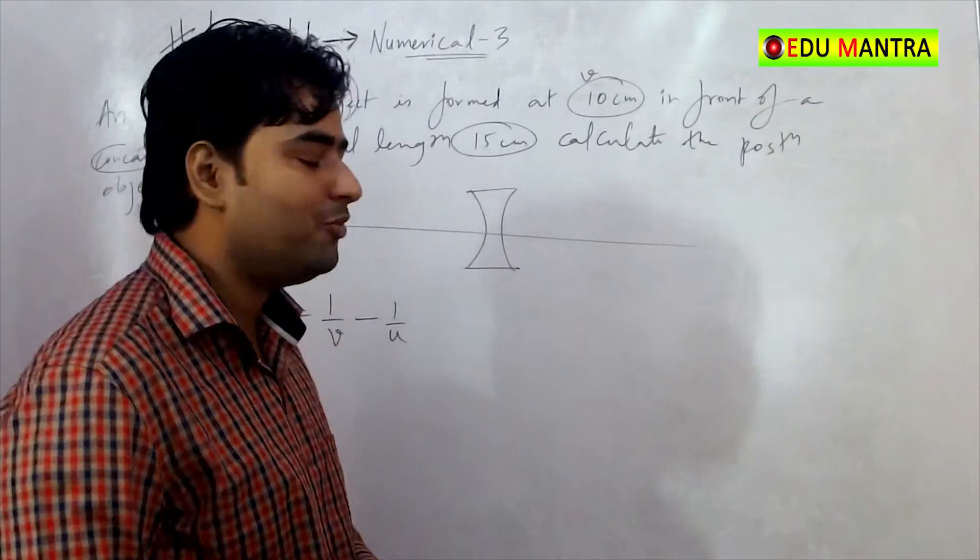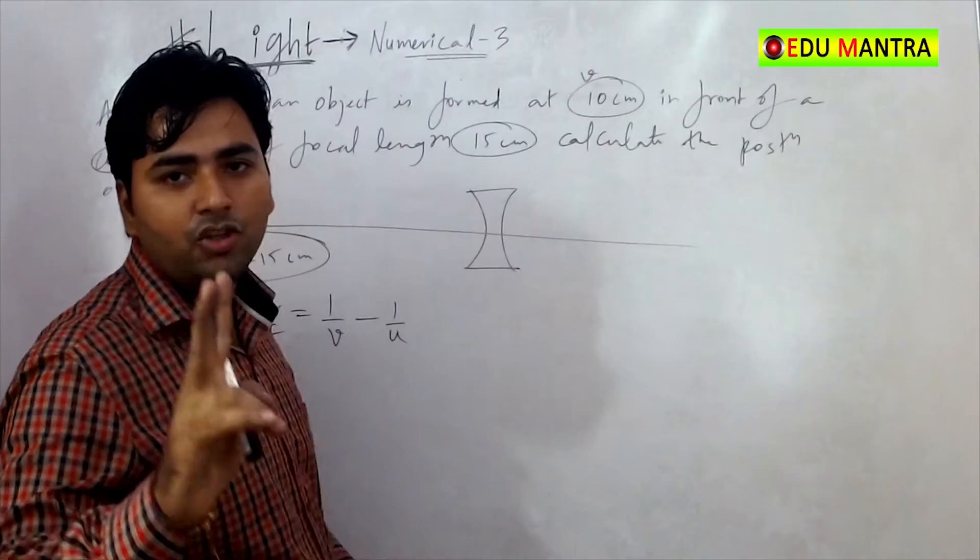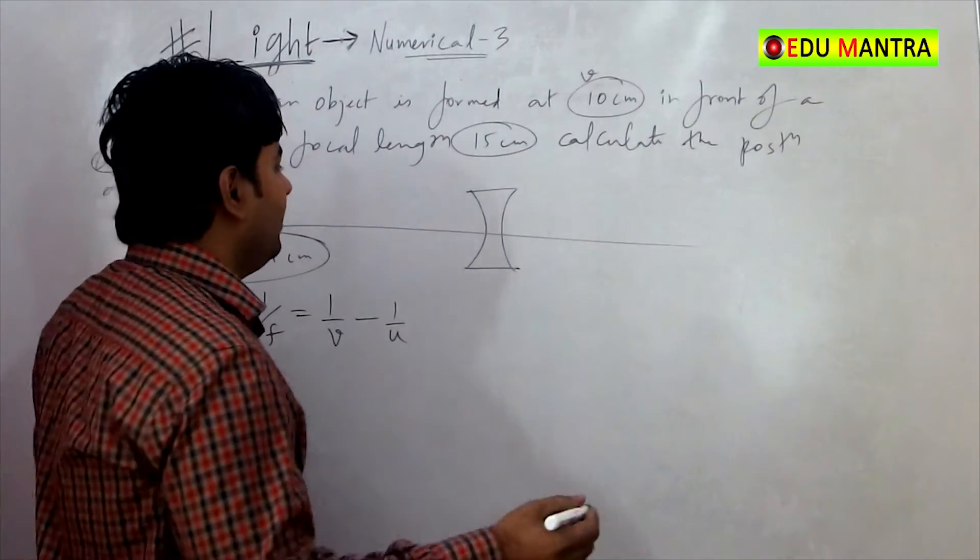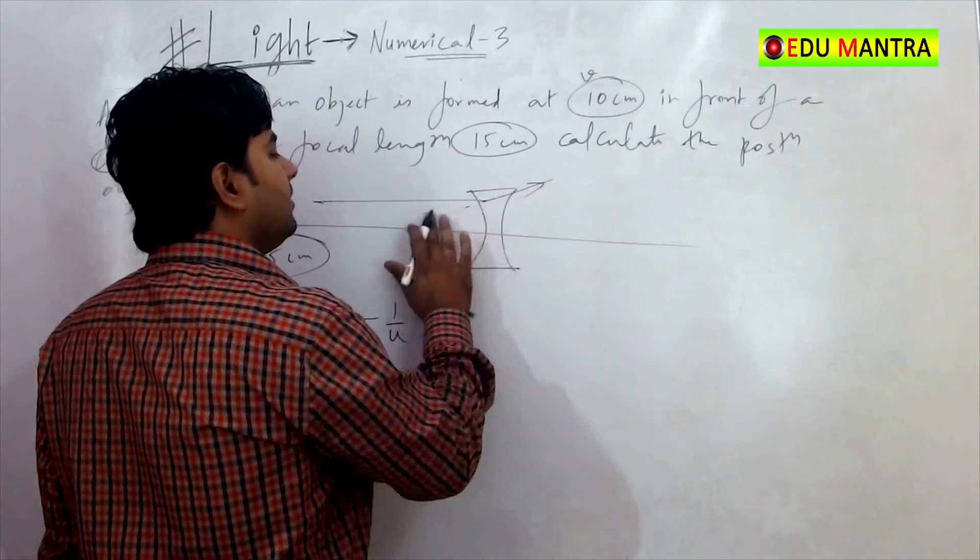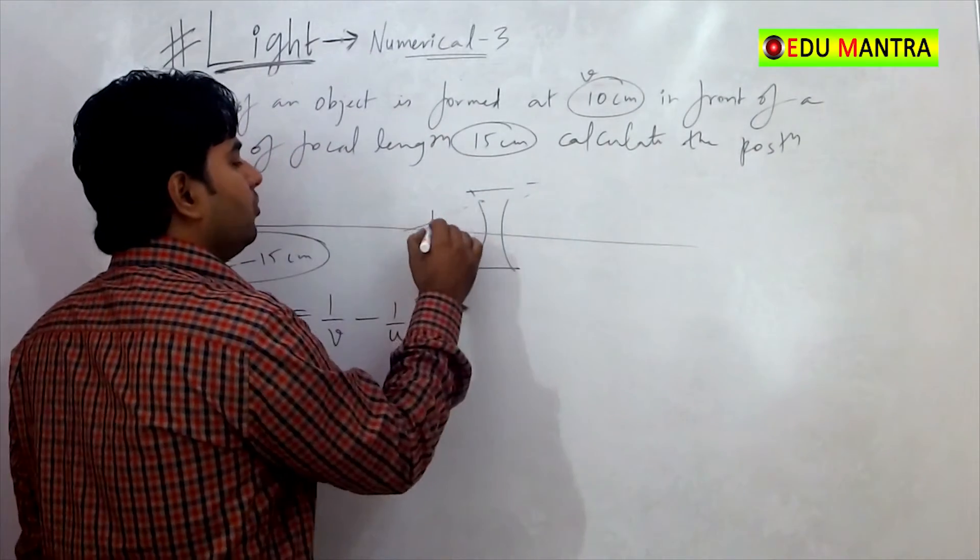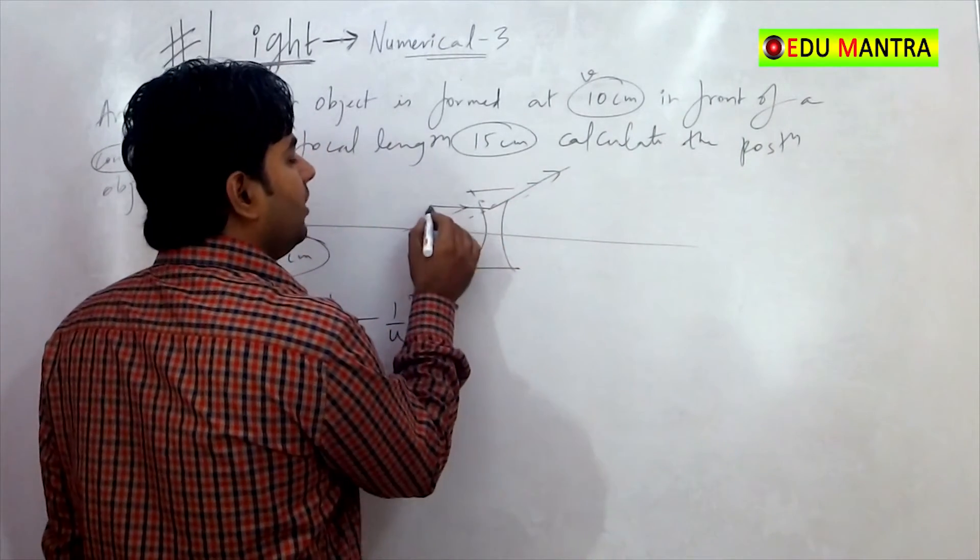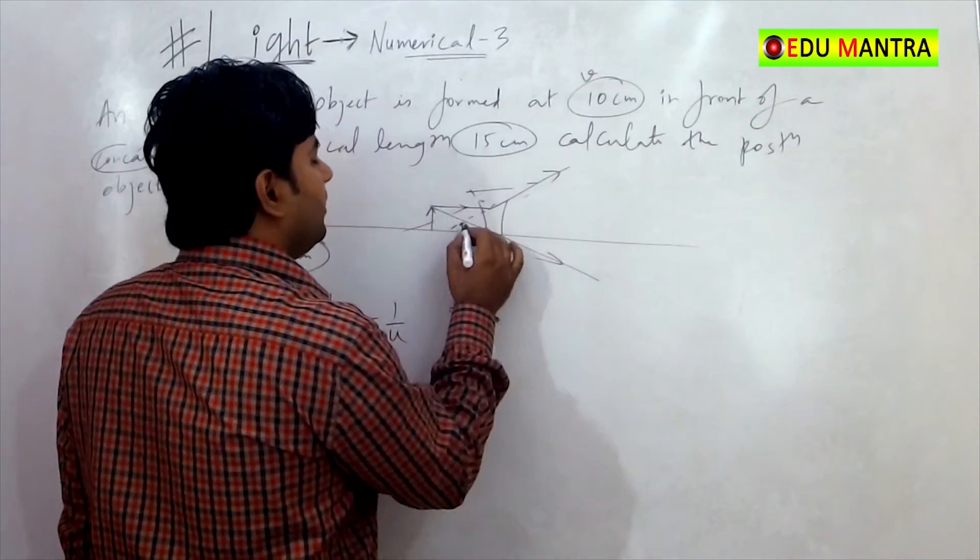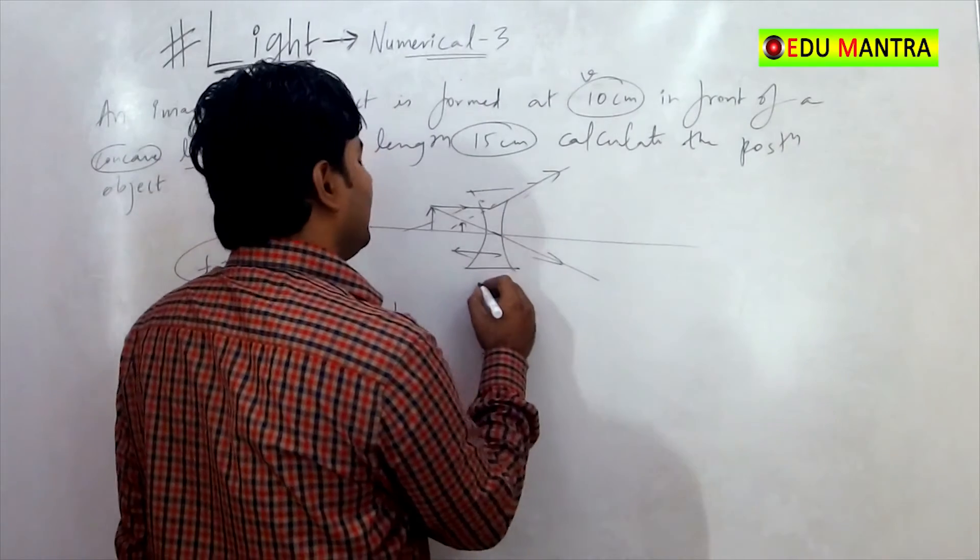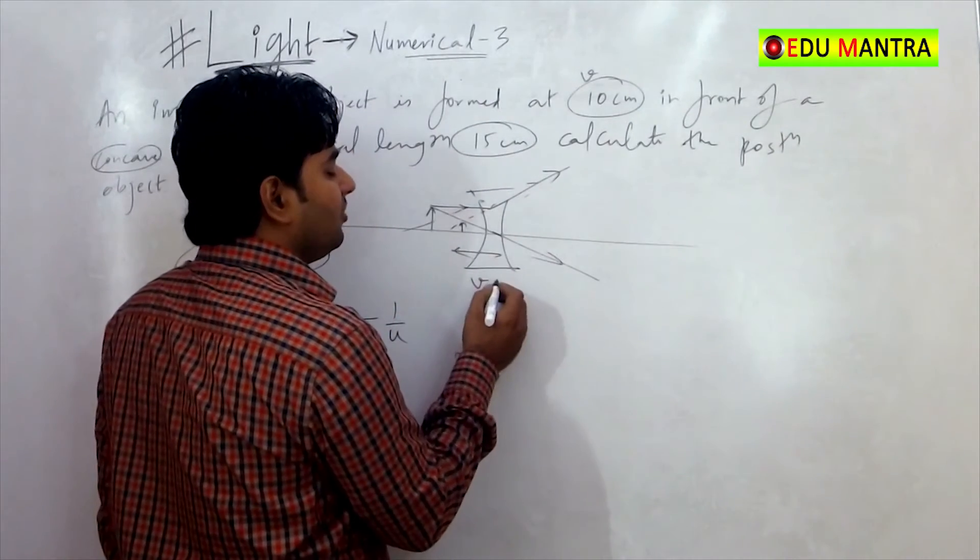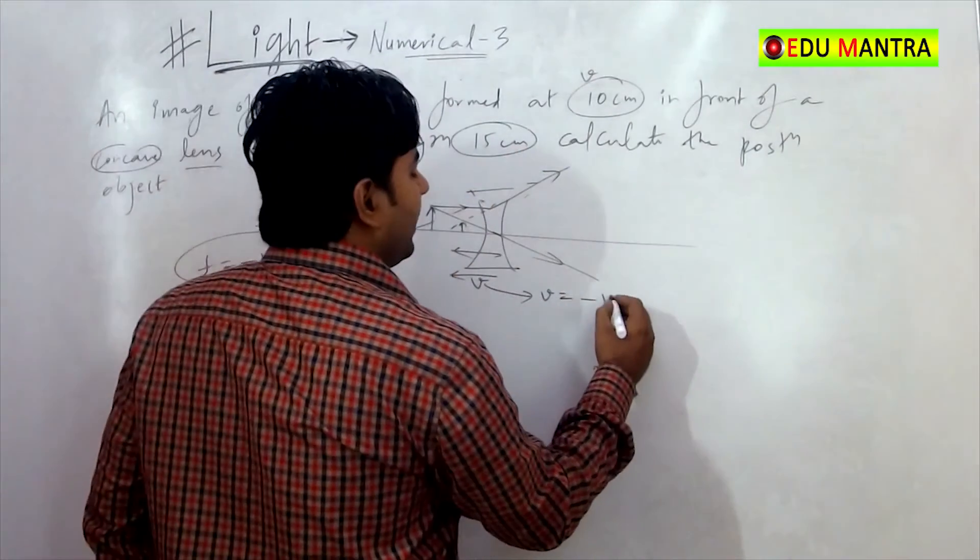If you see a ray diagram for concave lens, in two cases the image forms, we know that the image is on the same side. If you look at the definite distance, the image is on the same side. If you look at the left side, we can say that V is on the left side and because of that V is negative.